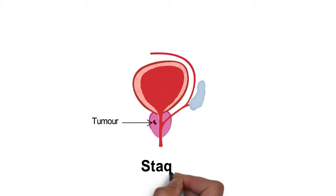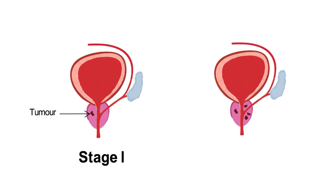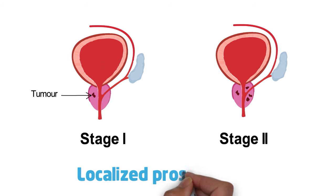The cancer stage describes how big the tumour is and whether it has spread outside the prostate to other parts of the body. If the tumour is found only in the prostate it is called localized prostate cancer and it includes both stage 1 and stage 2 disease.